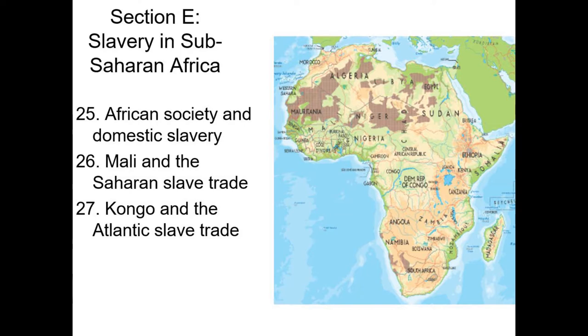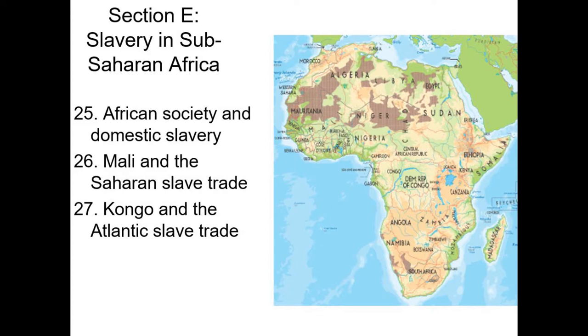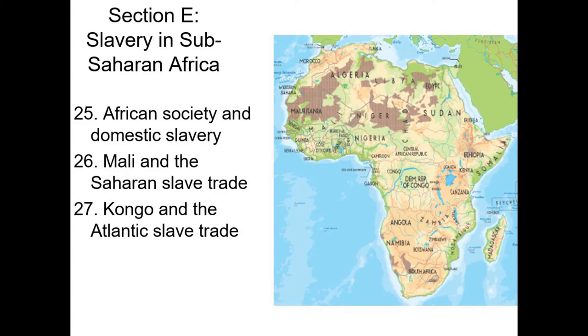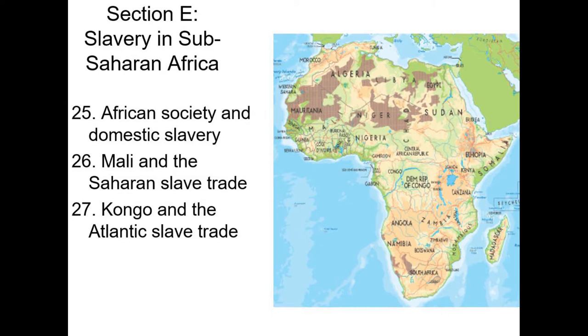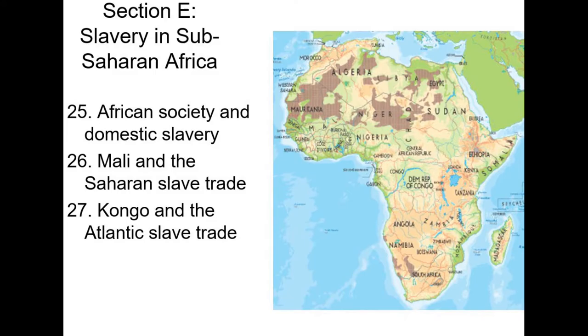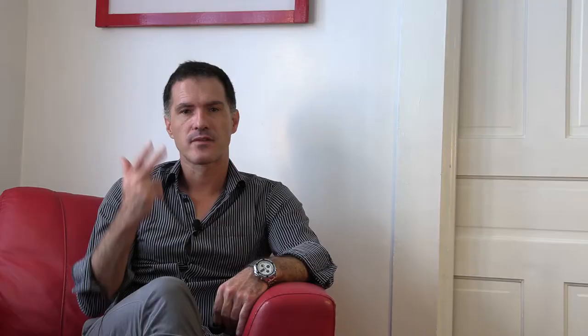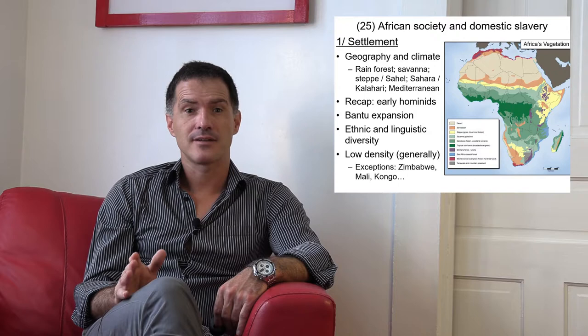In my world history courses, I like to organize each section around the same theme. For this section, it will be slavery — not just the Atlantic slave trade to the Americas, which we'll study when we get to the kingdom of the Congo, but also the export trade to the Muslim world, which we'll study when we get to the kingdom of Mali, and also the internal slave trade, Africans enslaved by fellow Africans, which we'll study today. Three lectures in all. Let's start by exploring the geography of Africa, which is relevant to our story today.